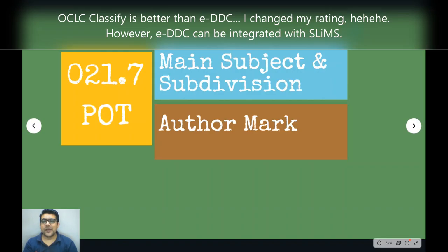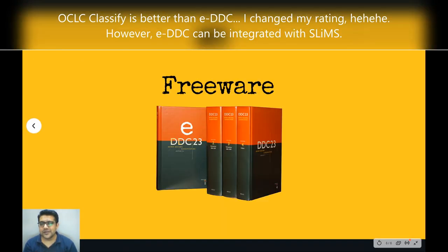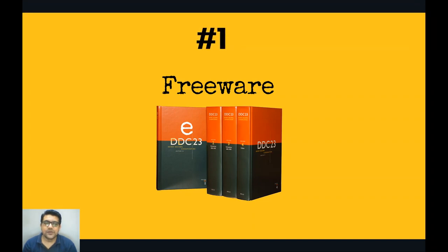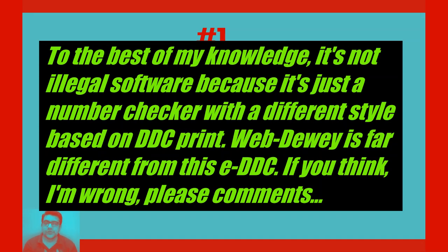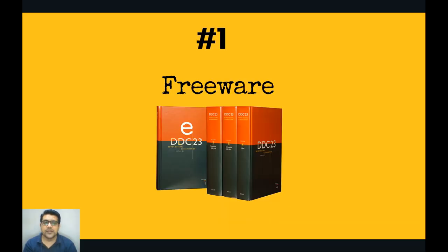At number one we have a freeware called e-DDC — a free software based on DDC 23rd edition, developed by Mohammad Rotmianto, an Indonesian developer. This freeware is an unofficial version of DDC but it is not an illegal program. You just need to go to your web browser and write 'freeware e-DDC classification scheme', then download and install it.